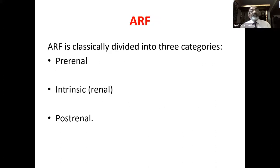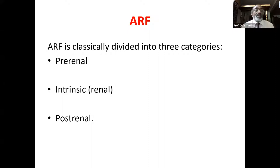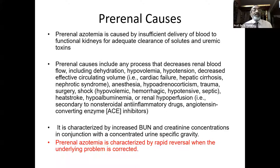Coming back to acute renal failure, this is classically divided into three categories: pre-renal, renal intrinsic, and post-renal. Pre-renal azotemia is caused by insufficient delivery of blood to the functional kidneys for adequate clearance of solutes and uremic toxins.